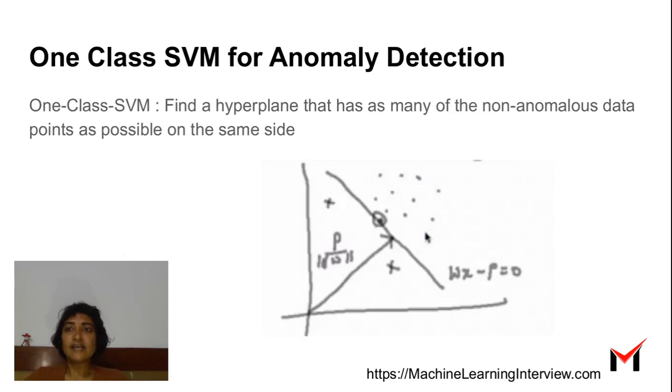The fifth technique is one-class SVM. The basic idea of an SVM is that it finds a hyperplane between the positive and negative examples that separates them. In this case, we want to find a hyperplane that somehow encapsulates all the non-anomalous data. In doing so, we will end up having the anomalous data points outside the hyperplane. How this is done is explained in a subsequent video.